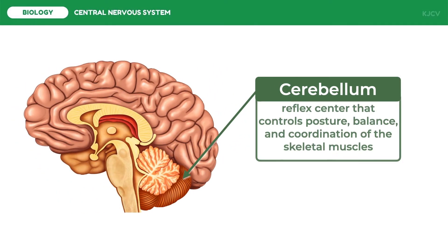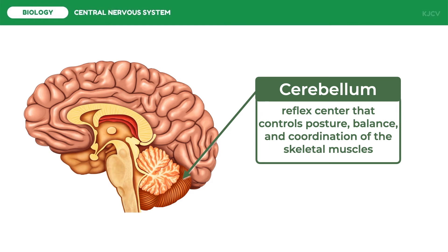The cerebellum is a highly folded, baseball-sized part of the brain that lies underneath the occipital lobe of the cortex and is attached to the back side of the upper portion of the brain stem. Stimuli from the eyes, ears, and from muscles and tendons are interpreted in the cerebellum. With this information, the cerebellum coordinates voluntary muscle movements, maintains muscle tone, and helps maintain balance.